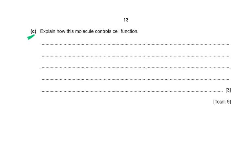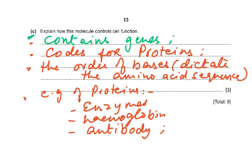Every body cell has the same genetic information because every human starts from one cell — the zygote — which divides by mitosis. However, genes are switched on in different parts of the body. Think of your bag containing all your books: in the biology class you take out the biology book. Similarly, the gene for insulin is switched on in the pancreas, and the gene for pepsin is switched on in the wall of the stomach. DNA controls cell function because it contains genes that code for proteins; the order of bases dictates the amino acid sequence, producing enzymes, haemoglobin, antibodies, and hormones.